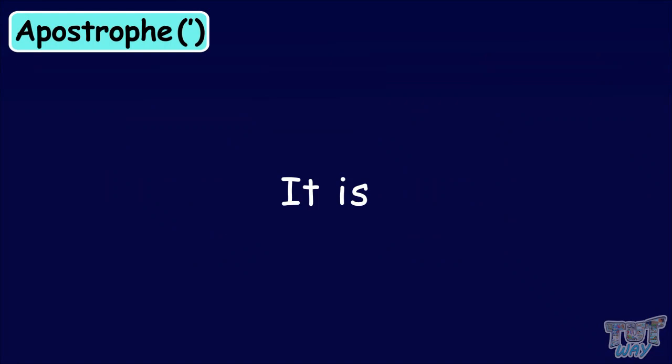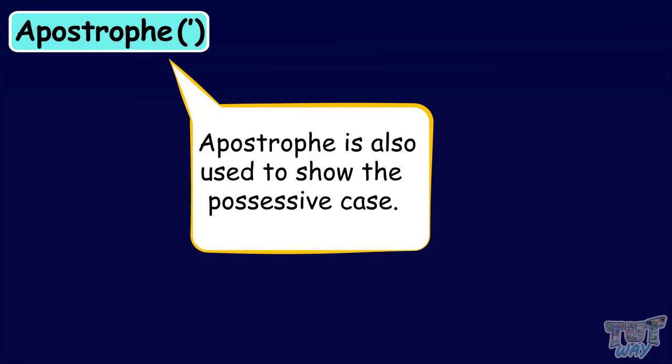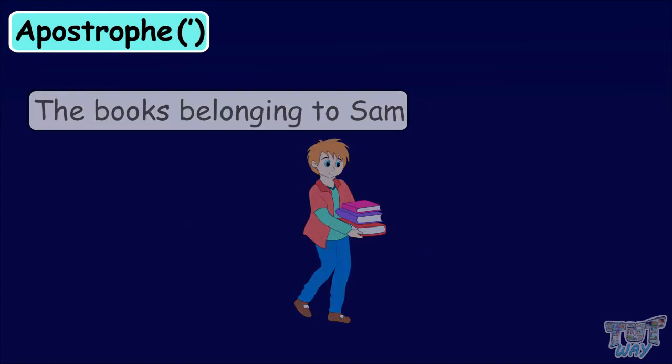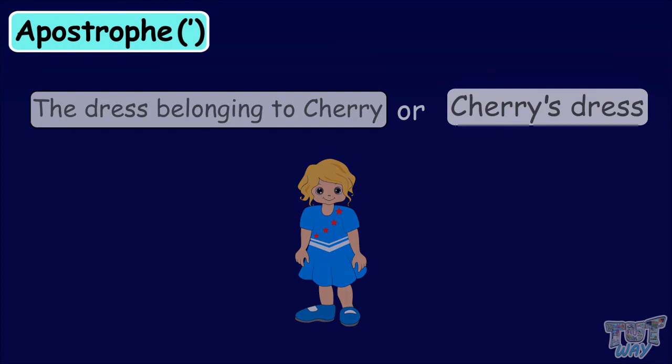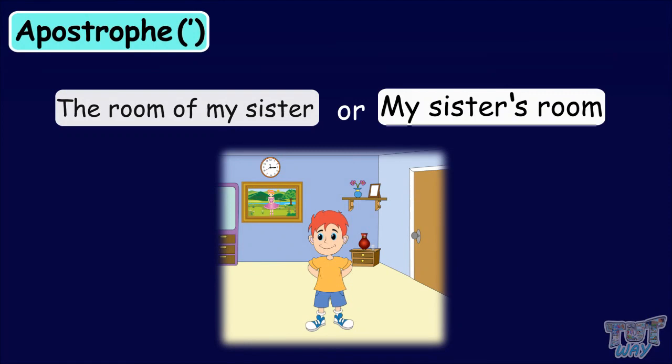Apostrophe is also used to show the possessive case. Like, if we want to say that the books belong to Sam, we can say Sam's books. The dress belonging to Sherry can be written as Sherry's dress. The room of my sister can be written as my sister's room. The life of a woman can be written as a woman's life. The painting of Maria can be written as Maria's painting.